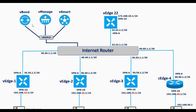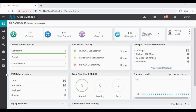This is the topology for this video. I have the controllers at the top, and I have VH1, VH2, VH3, VH4, and also VH22. In this lab, we will attach one common device template to VH1, VH2, VH3, and VH22, and we'll enter the WAN IPs and service VPN IPs using a CSV file.